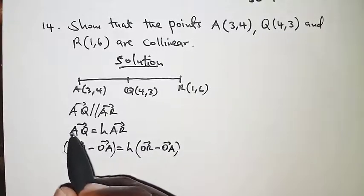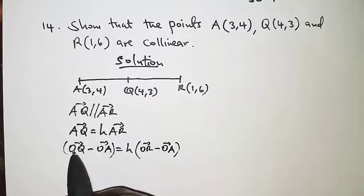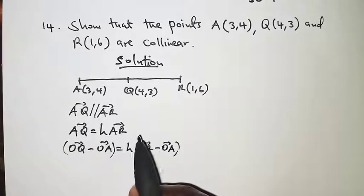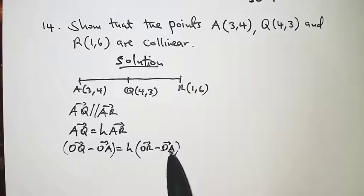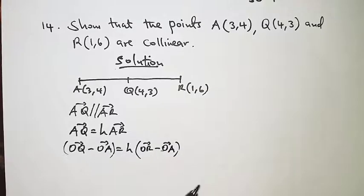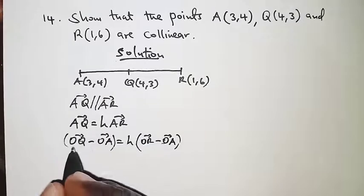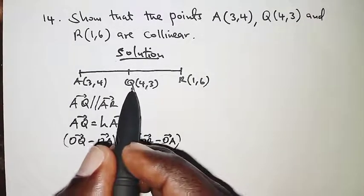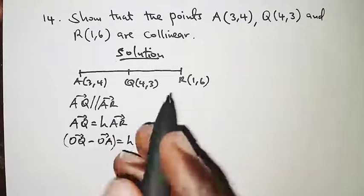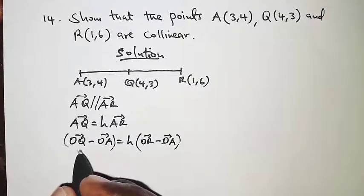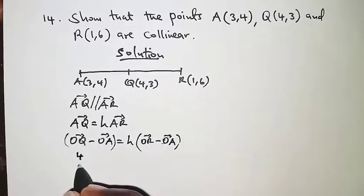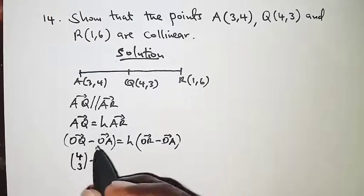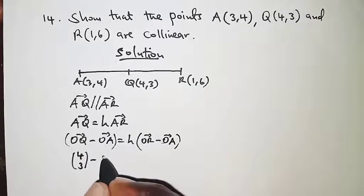Q minus A, but because it's a position vector, so it's OQ minus OA. For this other case, R minus A, which is OR minus OA for the position vectors. So for OQ we are going to have the position vector for point Q as a column vector, that should be written as (4,3) minus OA, that is (3,4).